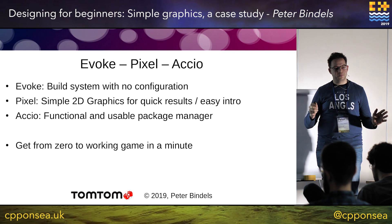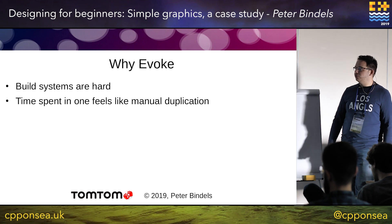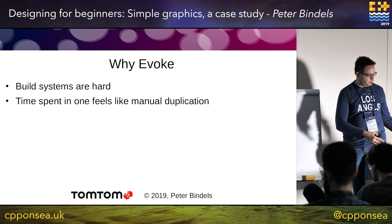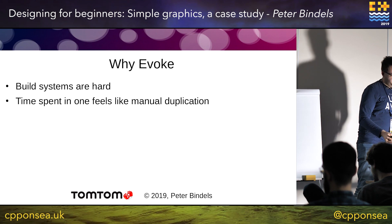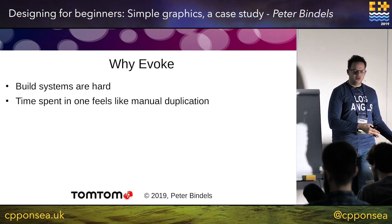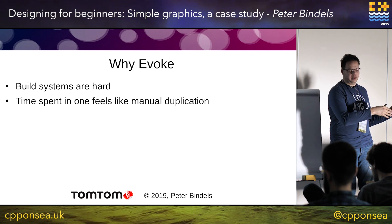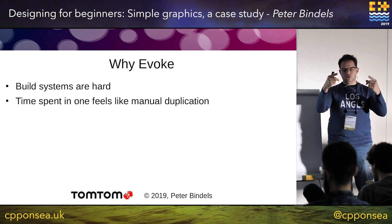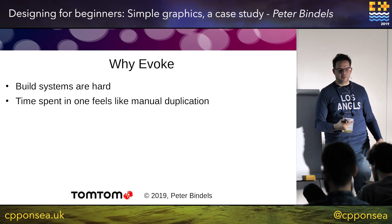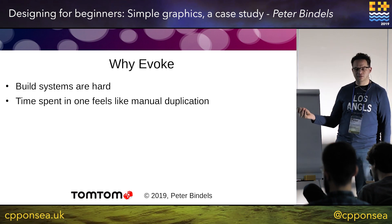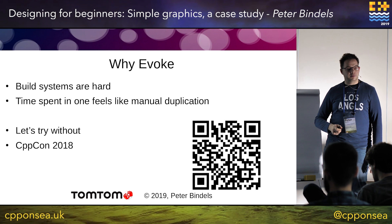The goal: get from zero to a working game in a minute. So the first thing was Evoke — build systems are hard. All you're really telling it is: I wrote these three files, they have CPP extensions, compile them as source code, and link the headers I'm including. Why do I keep telling everything to the build system when I've already told it to my computer? Can't it just read that and use it? That's Evoke. But we're not going to talk about that because I did a talk at CppCon 2018.